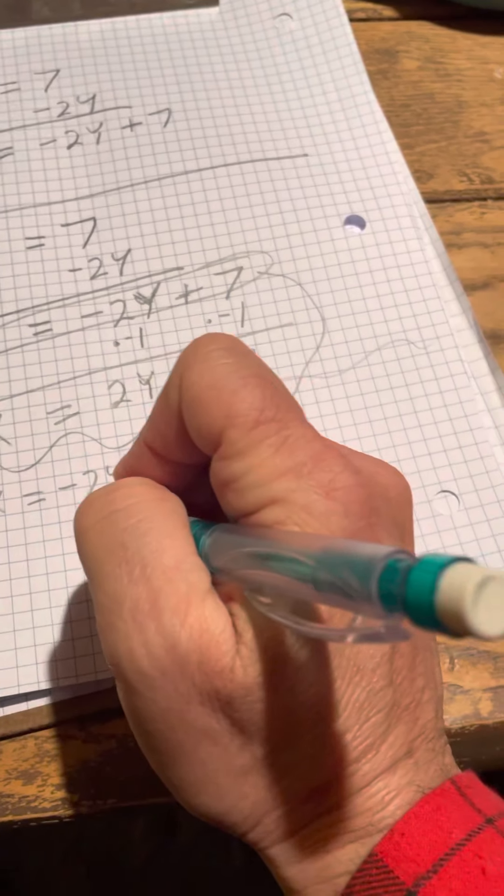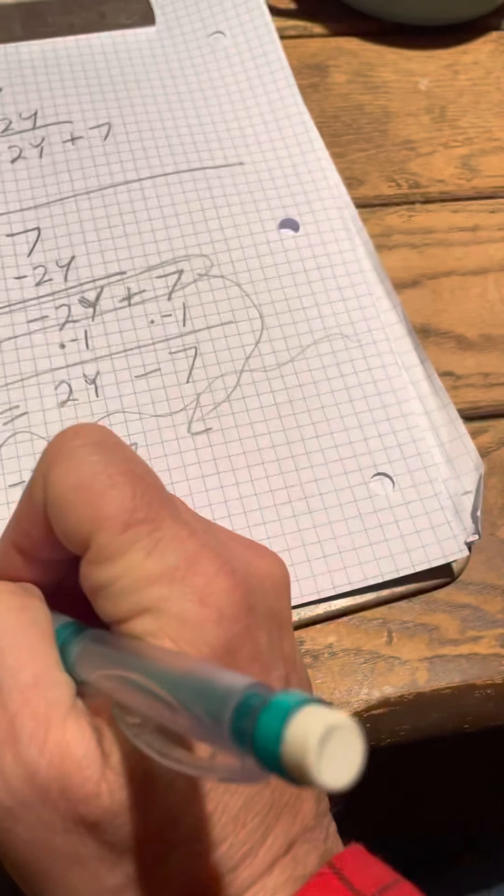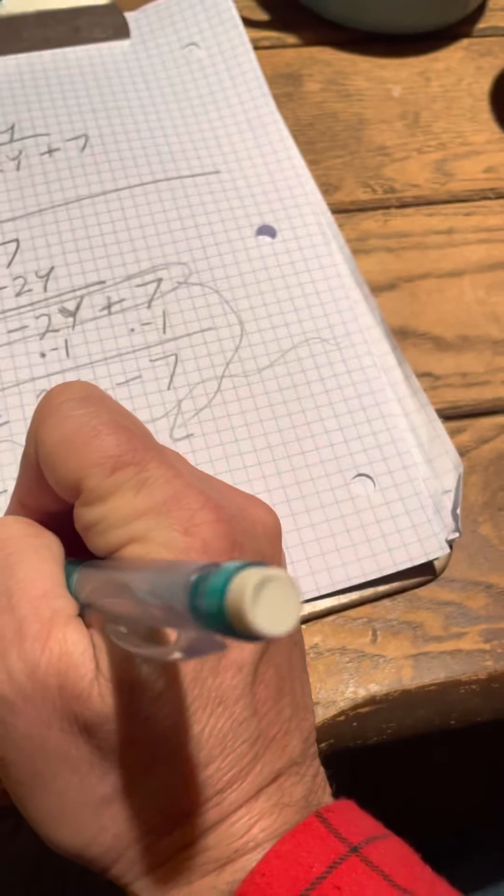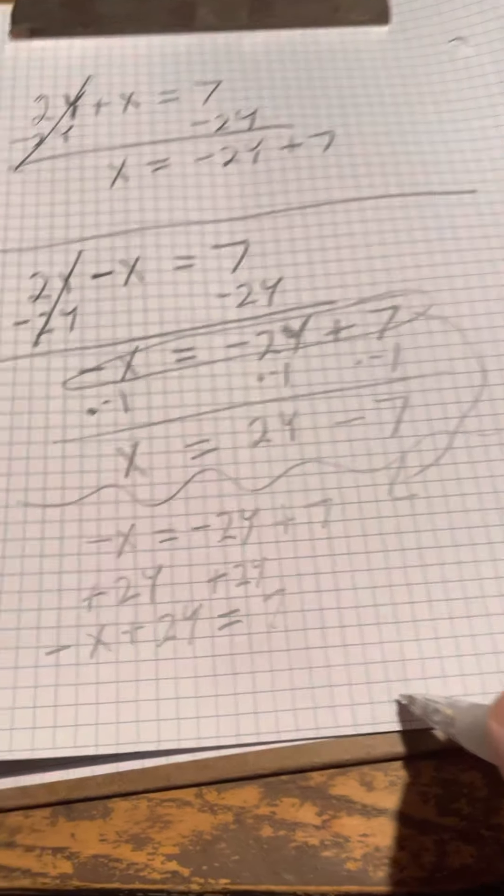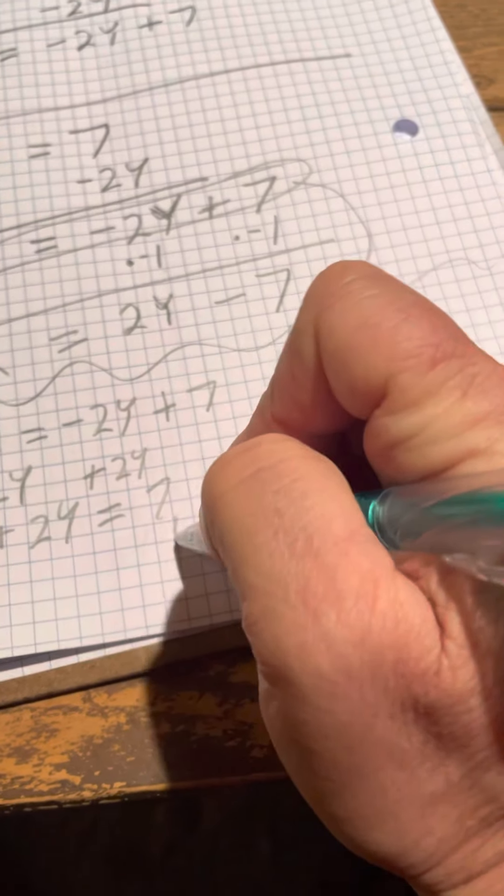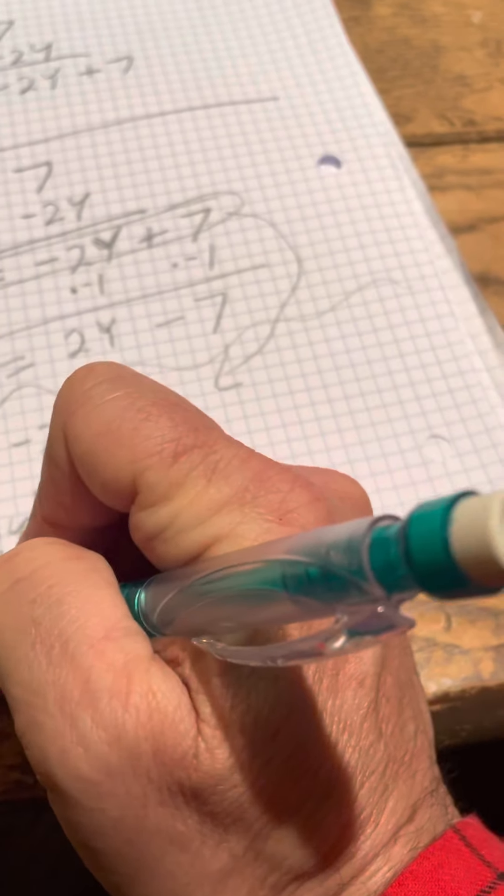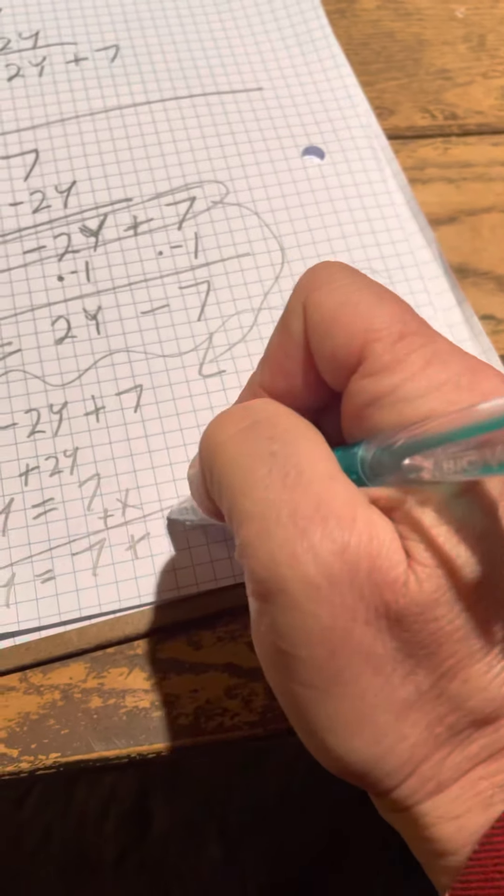What you can do is you can add 2y to both sides, and what do you get here? You get negative x plus 2y equals 7. Well, that didn't help, but what if you do this? If you add x to both sides, then these are going to cancel out. You're going to get 2y equals 7 plus x, right?